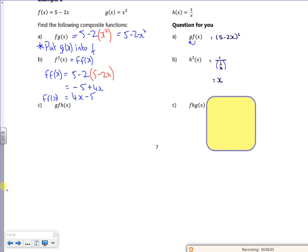One more here, g, f of h. So I've got to break it down bit by bit. So f of h. Have I done f of h? I haven't. That's putting h into f. So I've got 5 minus 2 lots of 1 over x. So f of h is 5 minus 2 over x.